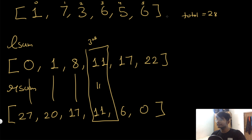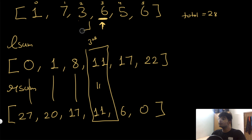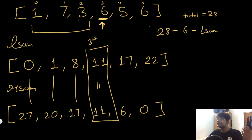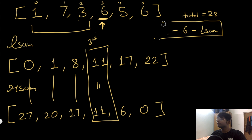Now let's decompose the right sum formula further. For the third index: we take the total sum, exclude the current number six, and exclude everything to its left — which is exactly the left sum at index three. So the right sum equals total_sum minus current_value minus left_sum. This relationship will be very useful to improve our solution.